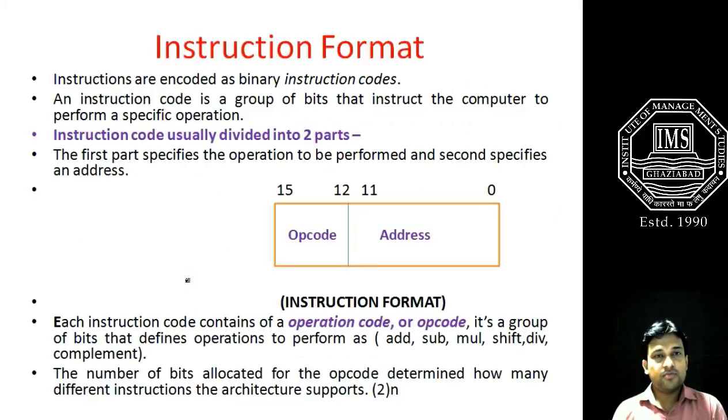So first of all, what is the instruction? As we know from our previous flips, instructions are binary codes which instruct the computer to perform certain operations or tasks. And the group of these instructions in the form of bits is called instruction codes.